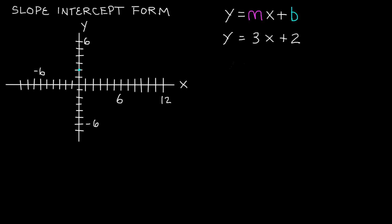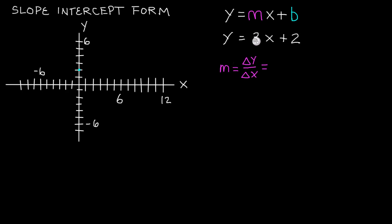The next thing we want to look at is the slope of our line. Our slope m is equal to 3. As a refresher, the slope of a line is equal to how that line changes in the y direction compared to how it changes in the x direction. Our slope is 3, so we can rewrite 3 as 3 divided by 1. So 3 is our change in the y direction, and 1 is the change in the x direction.